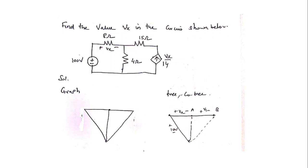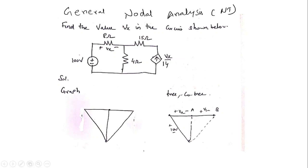This is the third video and we are going to discuss general nodal analysis in network topology. In the previous two videos we discussed definitions in network topology, and in the second video we discussed how to draw a tree and a co-tree as well as a graph. In this video we are going to find the value of Vx using general nodal analysis.